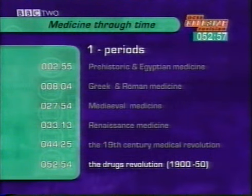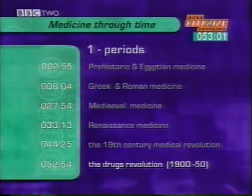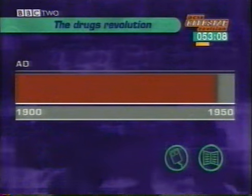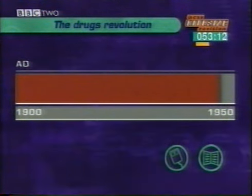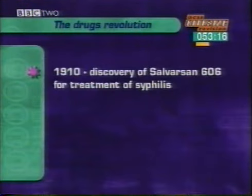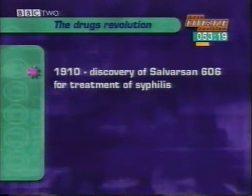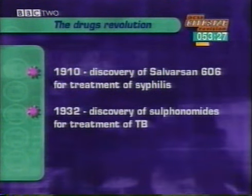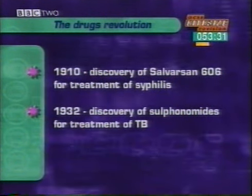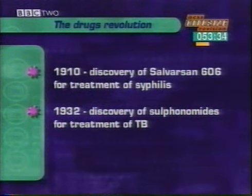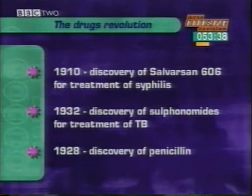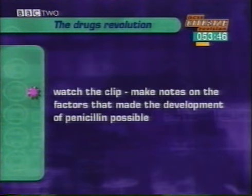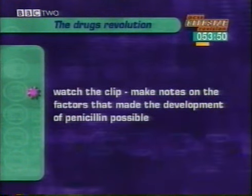Now we move on to the drugs revolution from 1900 to 1950. The early 20th century was a time of revolutionary new developments in the use of drugs to fight disease — drugs which could destroy certain germs without harming anything else in the body. In 1910, the German scientist Paul Ehrlich developed an effective treatment for the killer disease syphilis: a drug called Salvarsan 606. 1932 saw the first breakthrough in the treatment of tuberculosis — a chemical antibiotic called sulfonamide. But the most important of all the new drugs was penicillin, discovered in 1928 by Alexander Fleming.